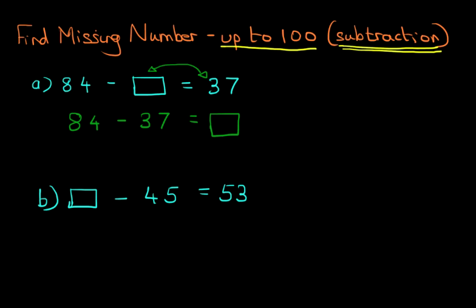So we've got 84 minus 37. We're going to label the columns, units and tens. We are now ready to do the subtraction.